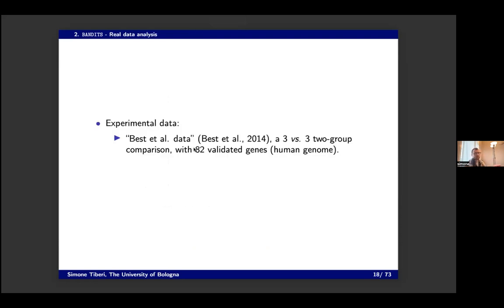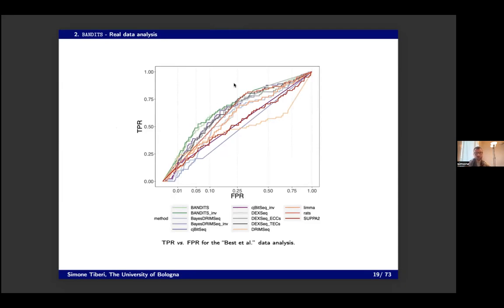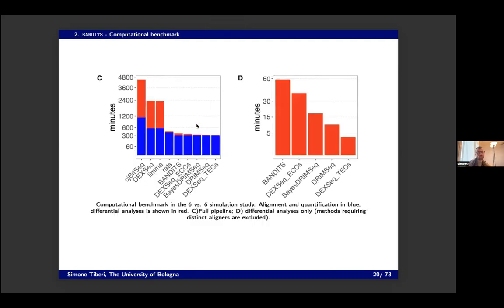Additionally, we used a real data set where some genes were validated in the lab. Simulations have a perfect ground truth, but they're never as realistic as real data; real data is perfectly realistic but you never have a perfect validation set. We try to do both to get an overall picture. With a validation set of 42 genes, we build a noisy ROC-like curve — BANDITS in green shows good performance in real data too. Computationally, BANDITS takes longer than simpler methods but remains within one or two hours for a full analysis on a laptop.